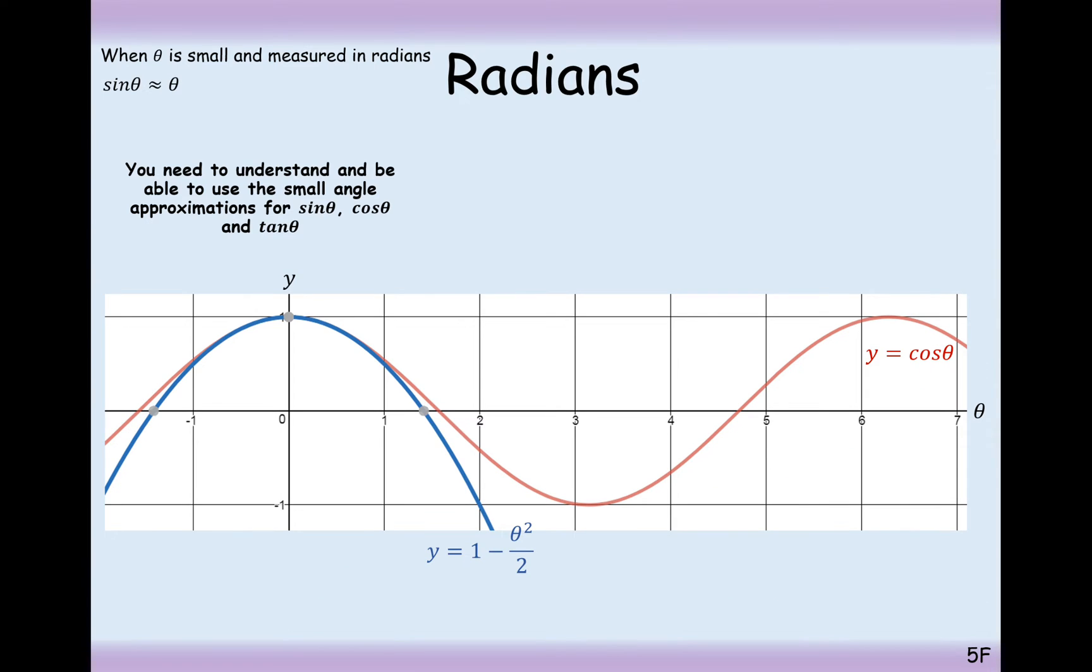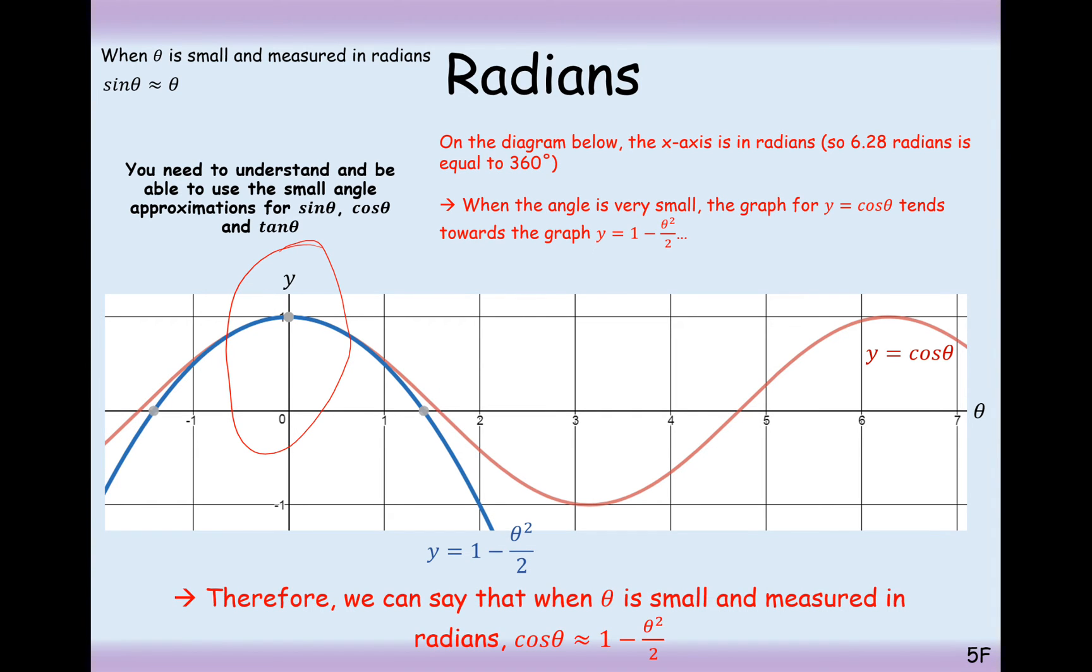For cos, the small angle approximation is 1 minus theta squared over 2. And that is almost identical at close to zero around this region here. There's almost no difference between the red line and the blue line. For cos, the small angle approximation is going to be 1 minus theta squared over 2.